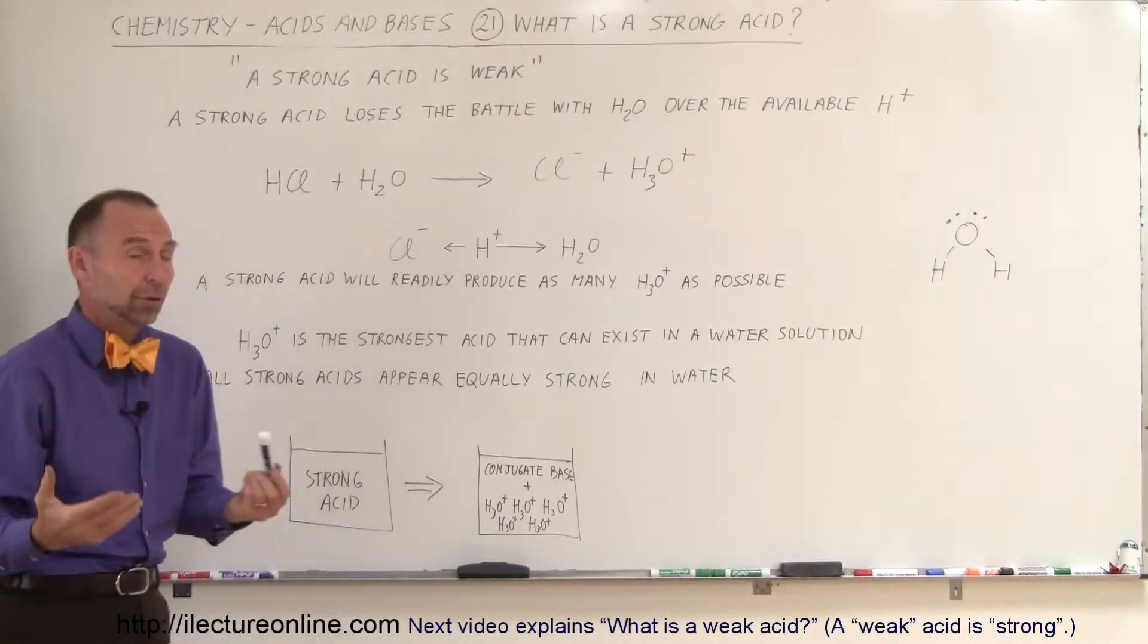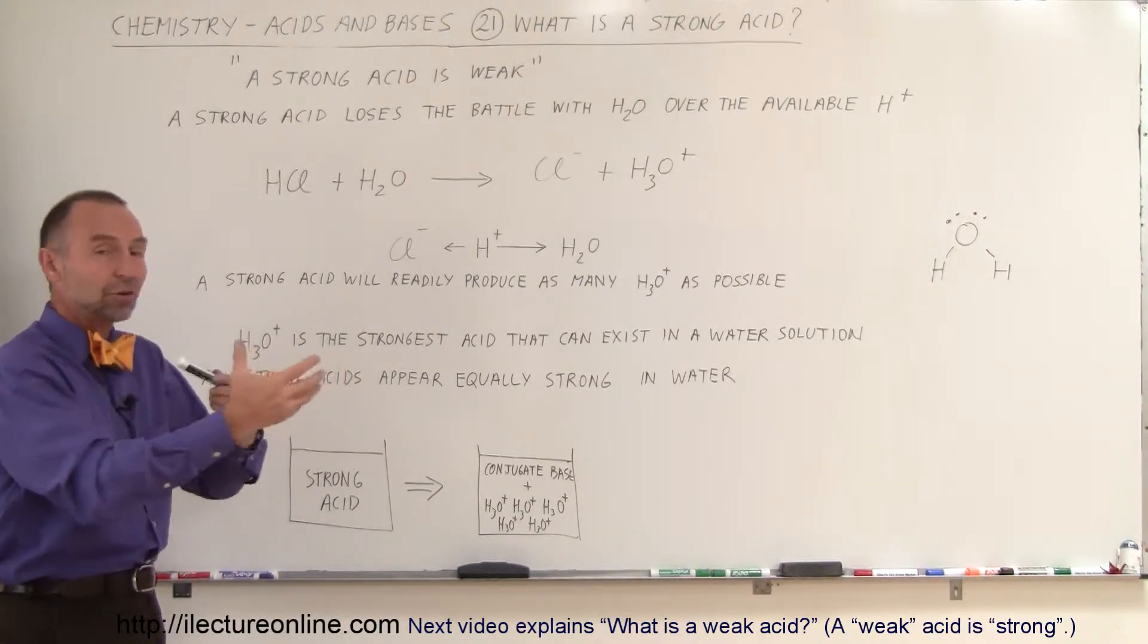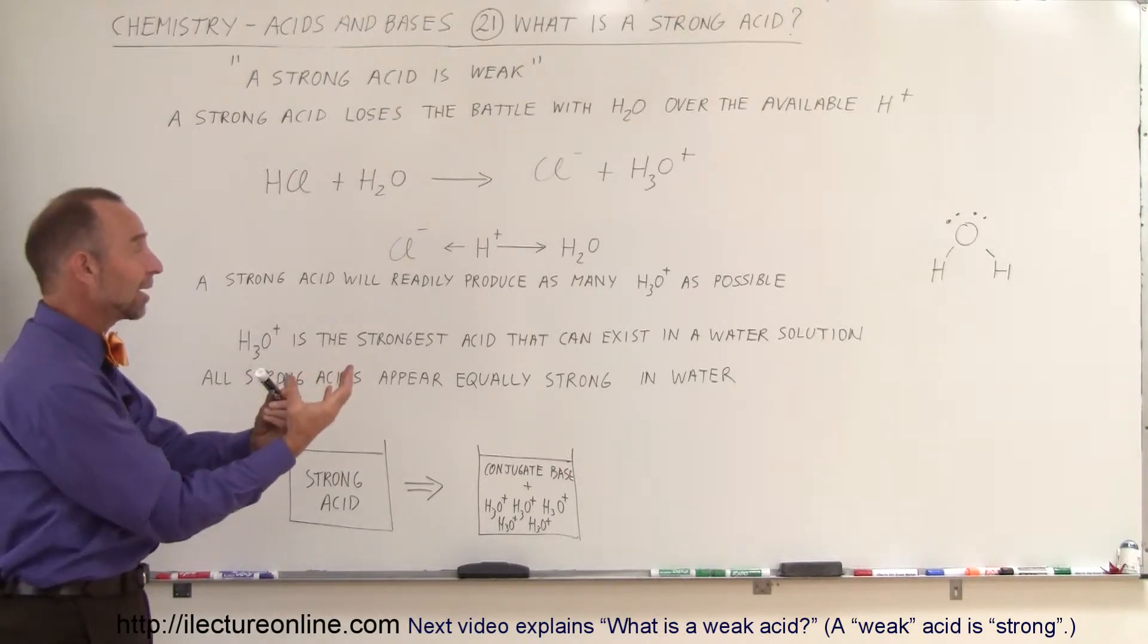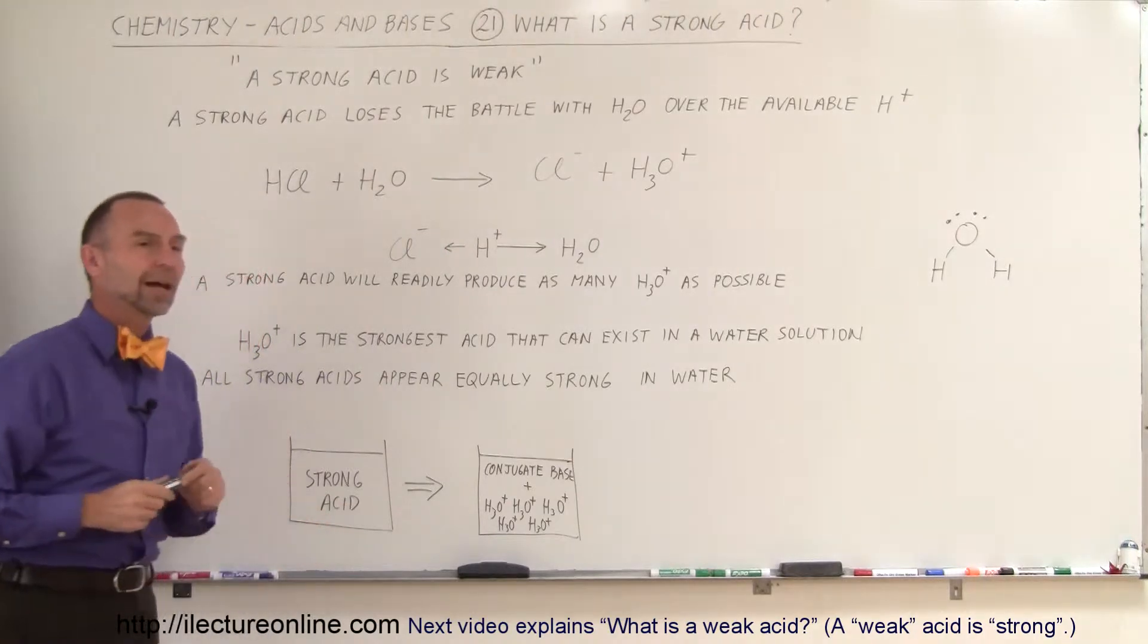So therefore, we can see that hydrochloric acid is actually very weak, because every time it struggles with a water molecule over the hydrogen ion, it loses the fight, and the hydrogen ion goes to the water molecule instead of the chlorine ion.